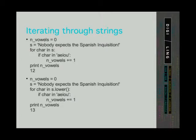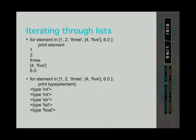Now let's take a look at iterating through lists. When we iterate through lists, we iterate an element of the list by an element of the list. In the first example we have just printed the element temporarily stored in the auxiliary variable named 'element'. In the second example we are printing the type of each element of the list. We can see that the first two elements are integers, the third element is a string, the fourth element is a list, and the fifth element is a float.